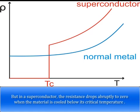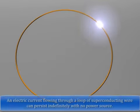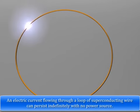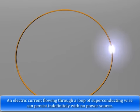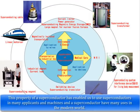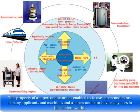But in a superconductor, the resistance drops abruptly to zero when the material is cooled below its critical temperature. An electric current flowing through a loop of superconducting wire can persist indefinitely with no power source. This property of a superconductor has enabled us to use superconductors in many applications and machines, and superconductors have many uses in the modern world.